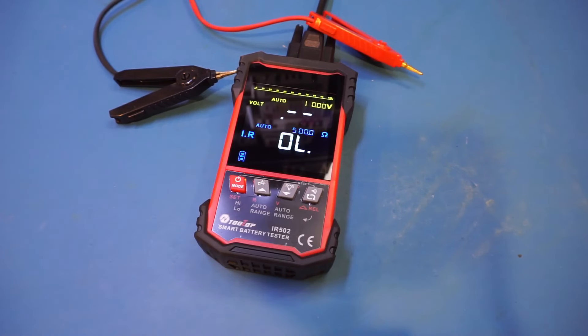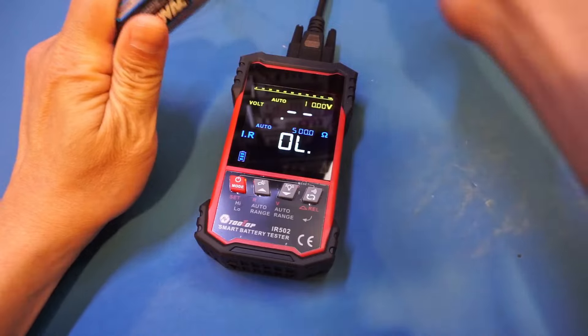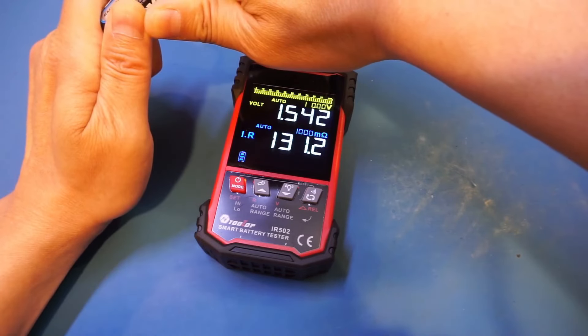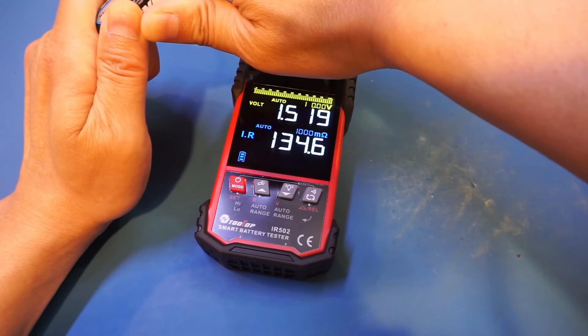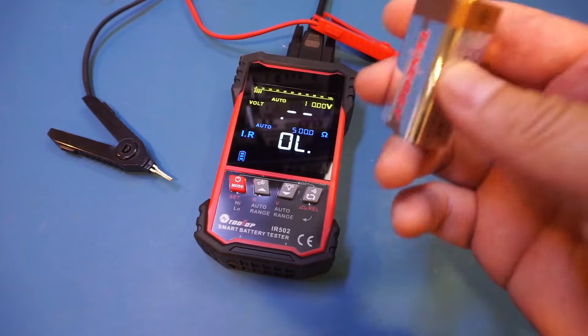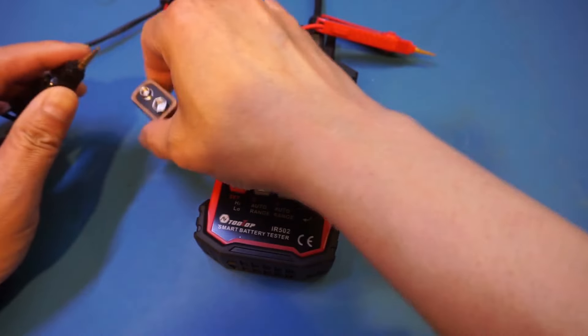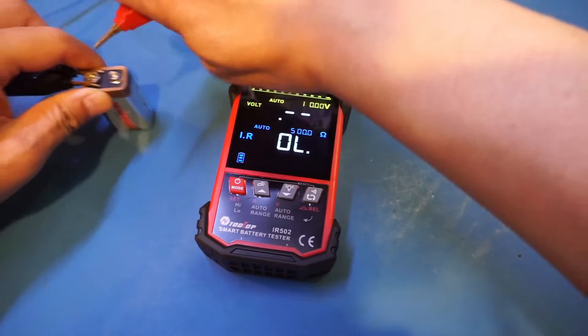The next battery we're going to test is a somewhat used C battery. You can see that we're measuring roughly 130 milliohms internal resistance here. Now let's move on to a nine volt battery. This one is also used, so I suspect the internal resistance would be much higher. Let's try to clip it on.